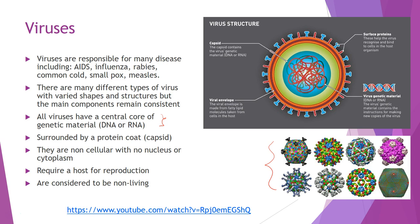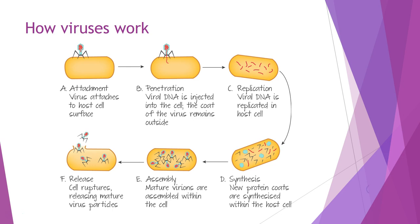Viruses have no cytoplasm, no organelles, and none of the normal cell machinery that we see in bacteria or human or plant cells. They have a viral envelope and surface proteins that allow them to interact with cells, but they are considered to be non-living. They are not able to replicate on their own — they require a host cell for reproduction — and they have no cellular organelles.